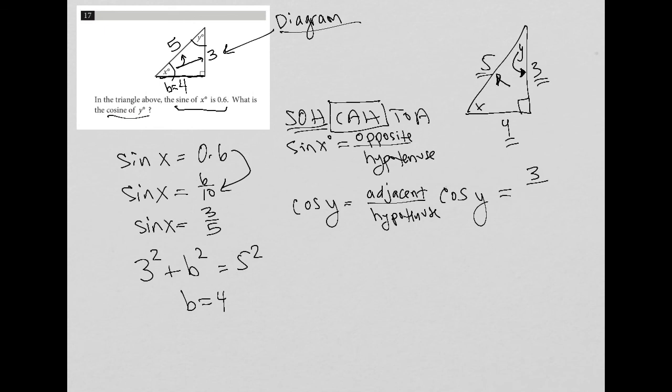And what's the hypotenuse? Well, that's this side here, that's 5. So the cosine of y is equal to 3 fifths, therefore 3 fifths is your answer here.